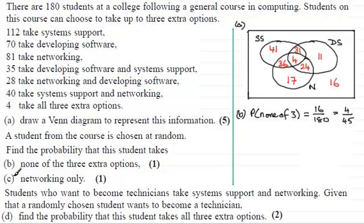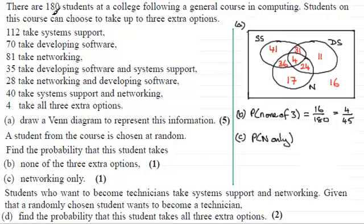For part C, the probability that they do networking only. For networking only, 17 students do networking only, so it's 17 out of 180 students. That's just 17/180, and that doesn't reduce down any further.